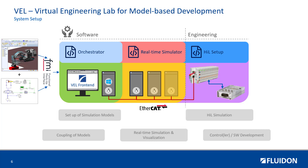The orchestrator organizes the simulation workflows and handles the coupled models. The real-time simulator is a powerful computer that calculates these models in real-time and also depicts the physical effects, like dynamics, pulsation, vibrations, and so on. The hardware-in-the-loop setup has an individual, adaptable IO terminal architecture that enables the connection of any customer hardware — in this case, a mobile control device. The orchestrator, real-time simulator, and hardware-in-the-loop setup are connected to each other via IFA-CAD and exchange data in real-time.